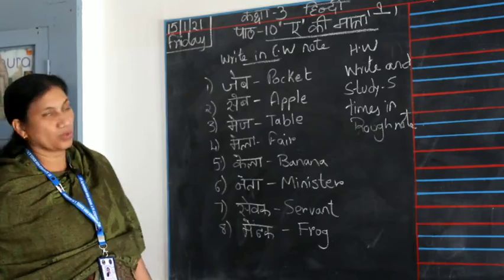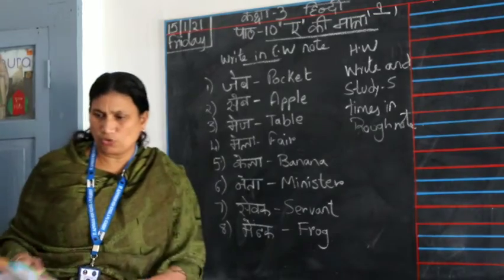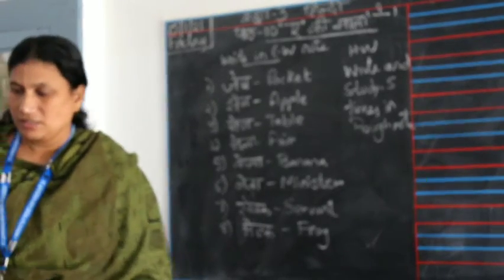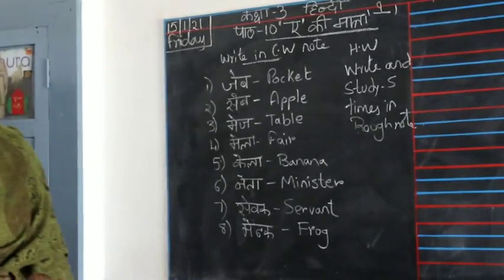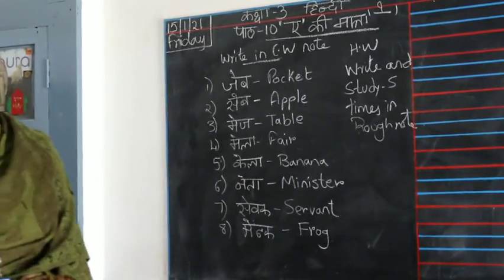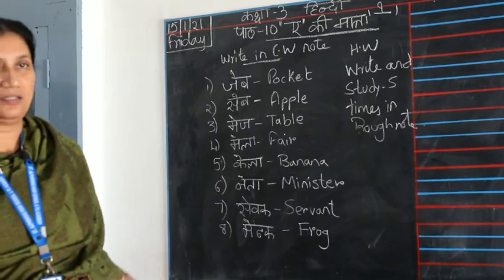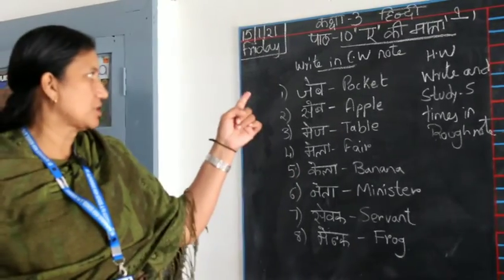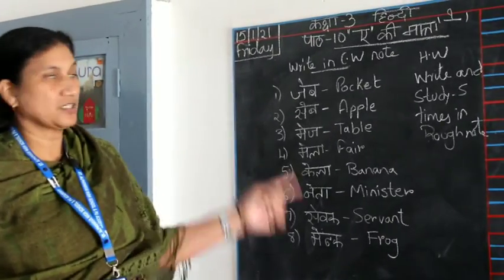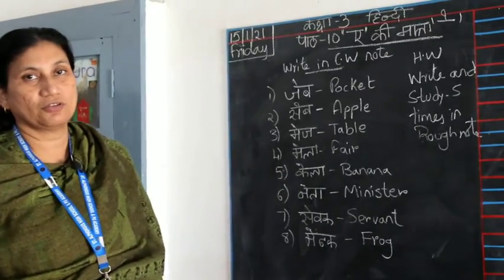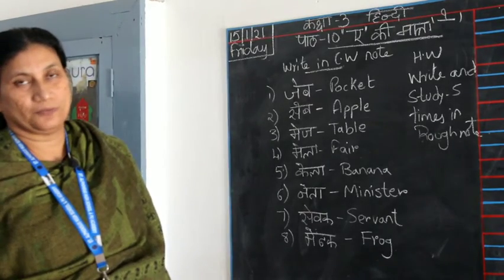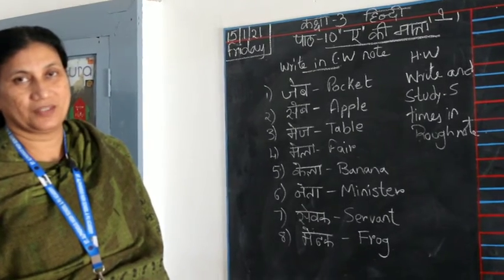So this much — eight words, children. A small amount for you all. Write it, take a picture, send it to Rohana ma'am, and send the homework of studying and writing five times in your rough note. I'll check and get back to you. Thank you.